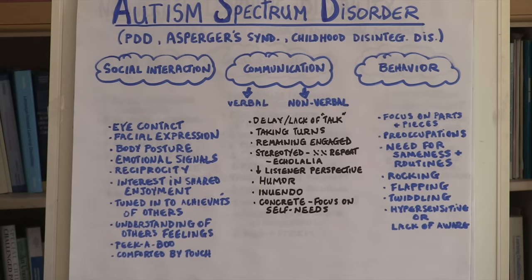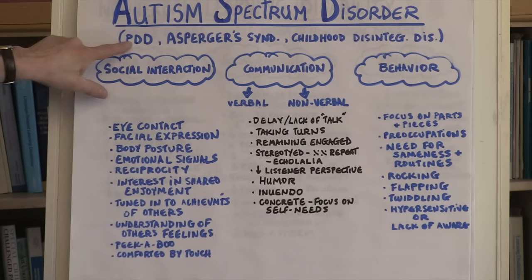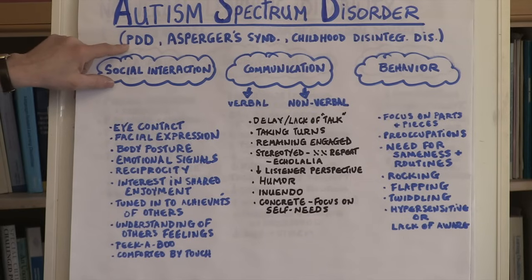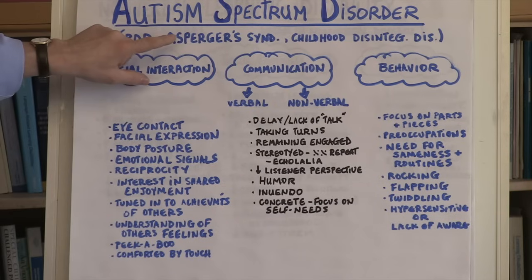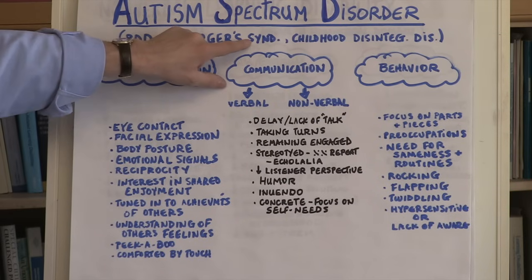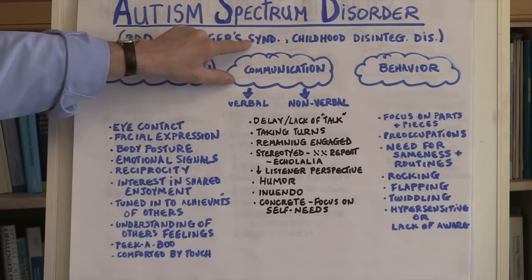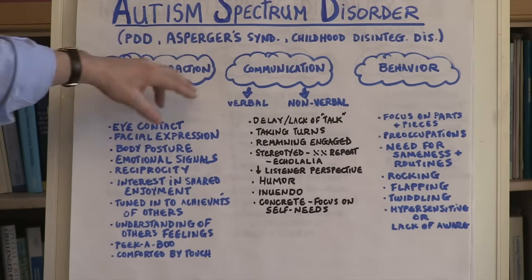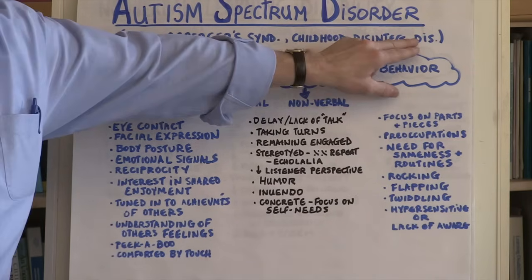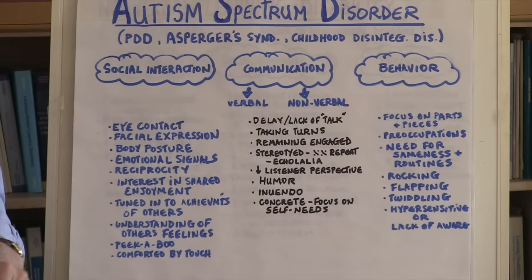When we talk about autism, we often talk about Pervasive Developmental Disorder, PDD, also referred to as PDD-NOS or not otherwise specified. We talk about Asperger's Syndrome, sometimes referred to as High Functioning Autism. And we talk about Childhood Disintegrative Disability or Disorder.